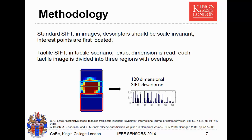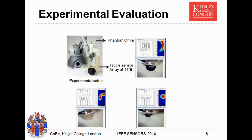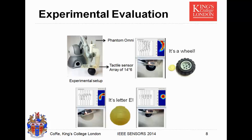In this way, we can apply the bag of features framework. Here is the experimental setup. This is a Phantom Omni robotic arm. The tactile sensor is attached to this arm. The tactile sensor has an array of 14 by 6 and is resistive-based. From here, you can see we get the tactile reading from the sensor. There were videos here, but they don't seem to work, so I'll demonstrate from the slides instead.